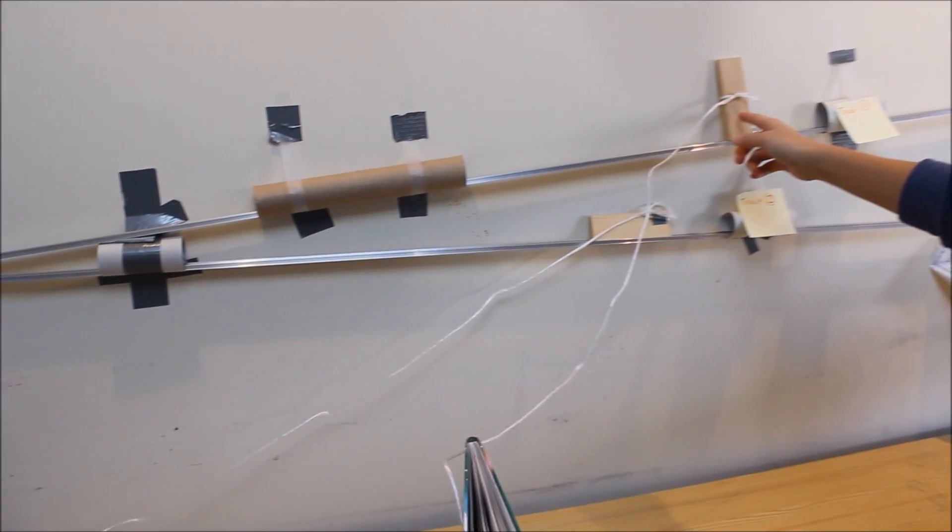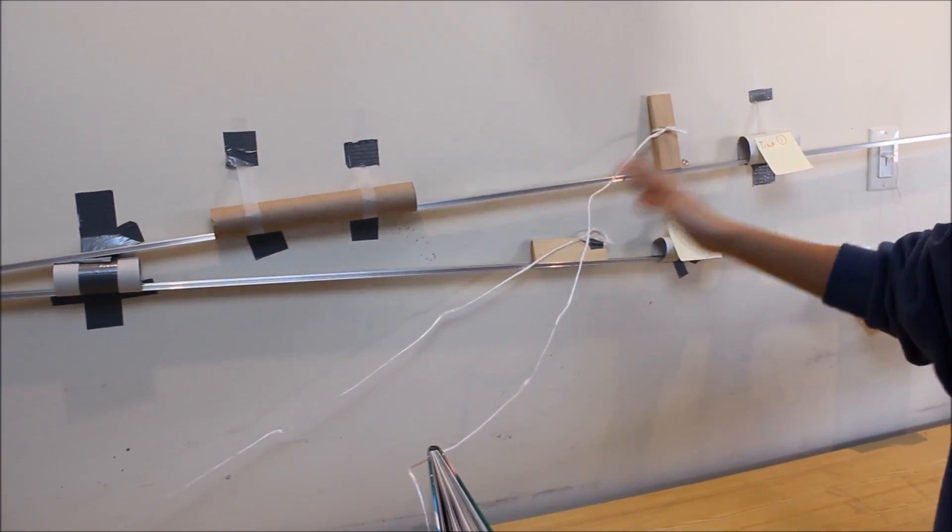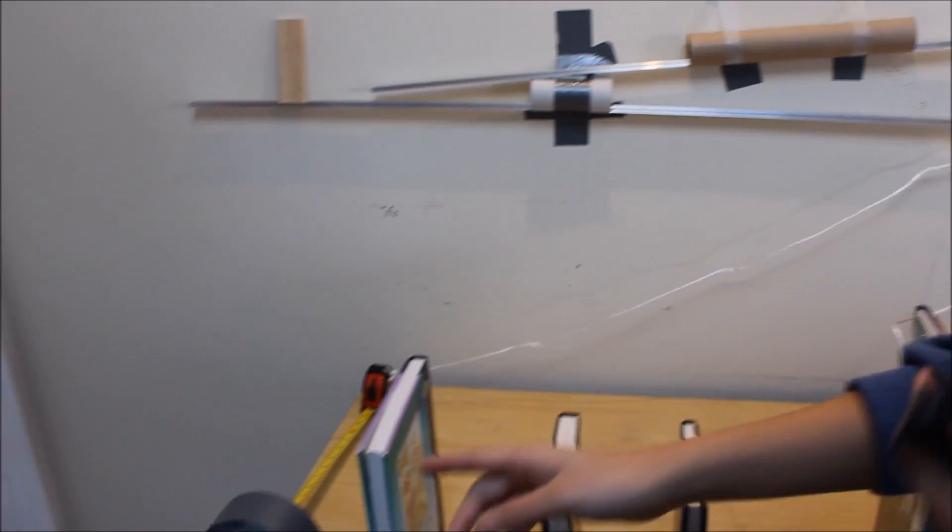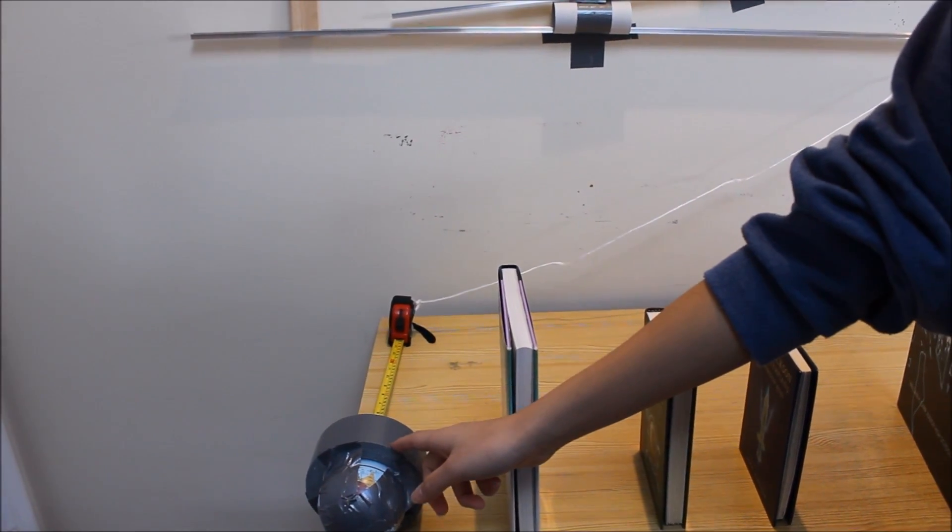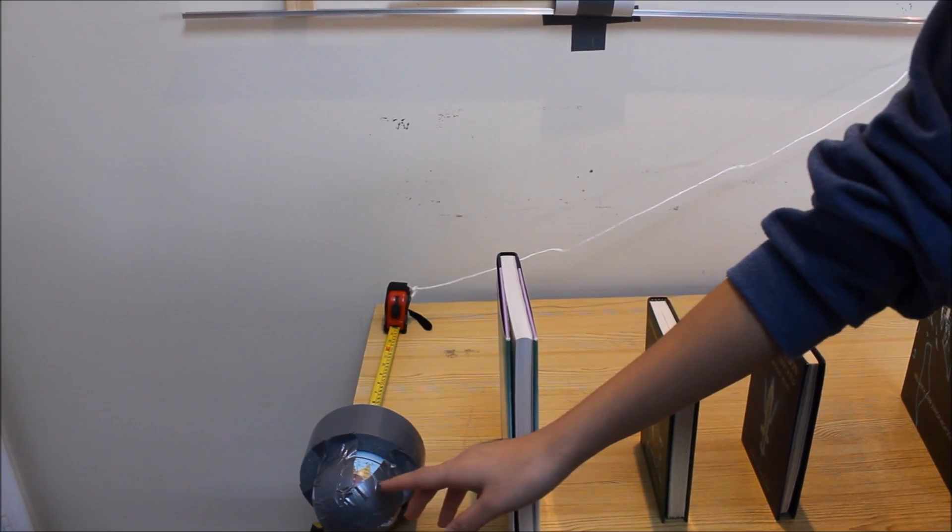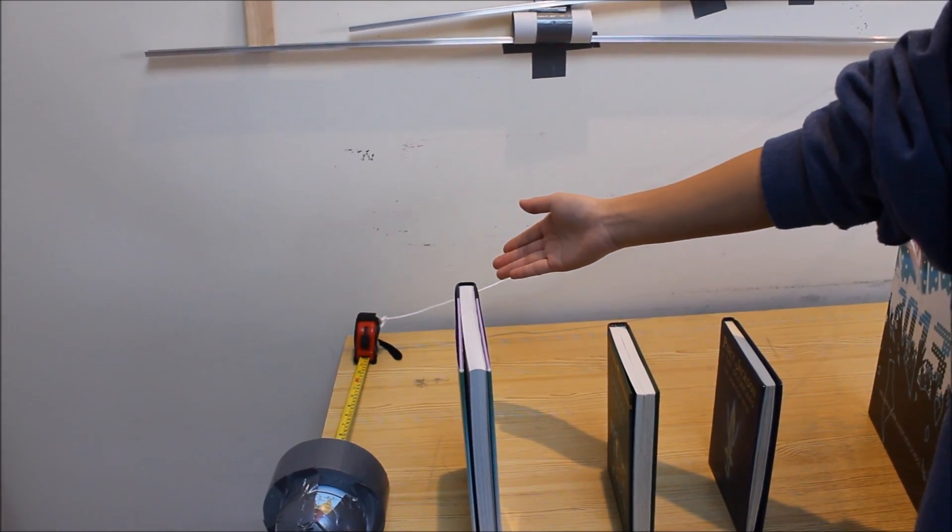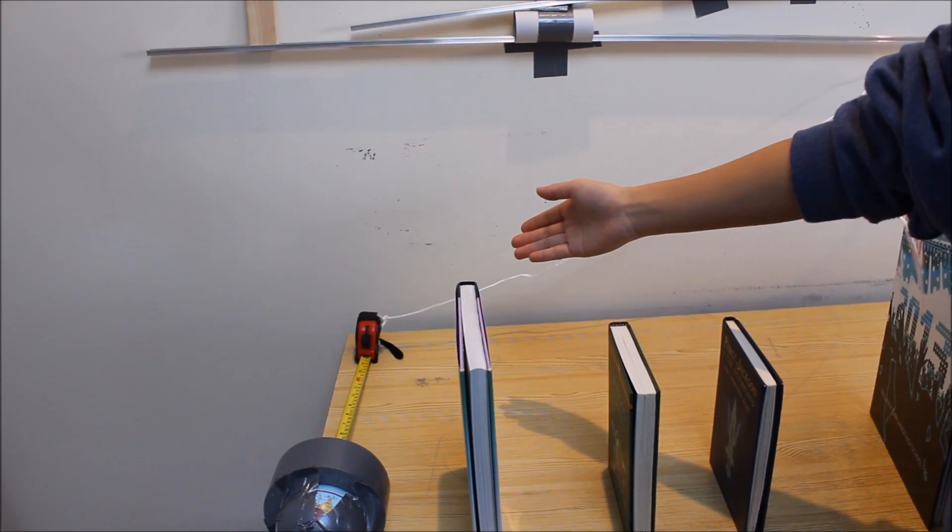This first obstacle on track one will fall down. The second thing that will happen is that this final book will hit into this roll of duct tape with a magnet attached, also attached magnetically to a tape measure.